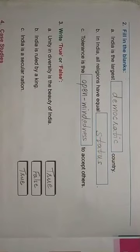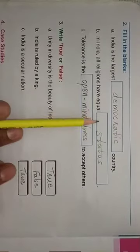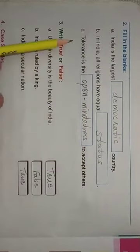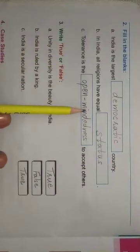Turn to page number 28. Your second question is fill in the blanks. India is the largest democratic country. In India, all religions have equal status. Tolerance is the open-mindedness to accept others.